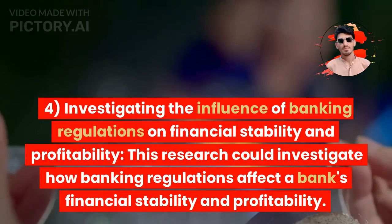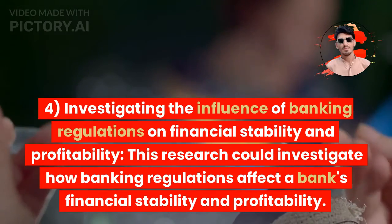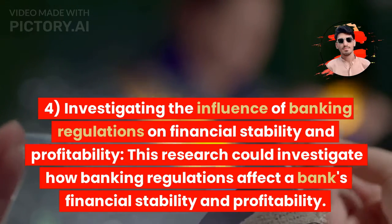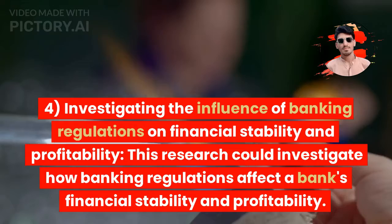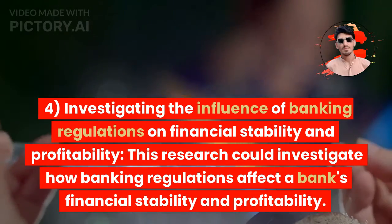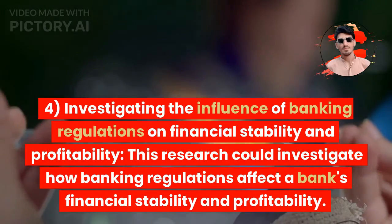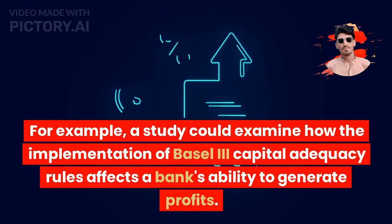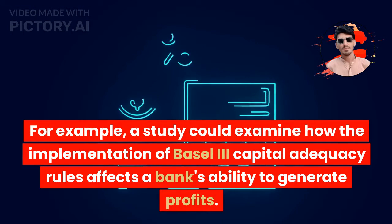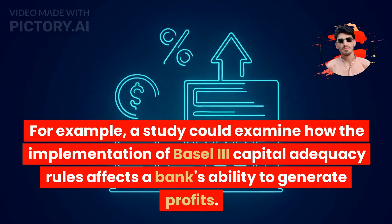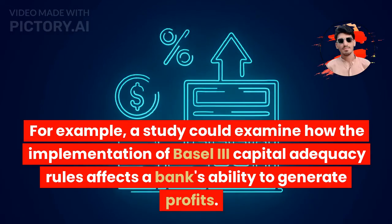4. Investigating the influence of banking regulations on financial stability and profitability. This research could investigate how banking regulations affect a bank's financial stability and profitability. For example, a study could examine how the implementation of Basel 3 capital adequacy rules affects a bank's ability to generate profits.